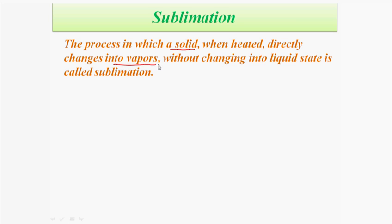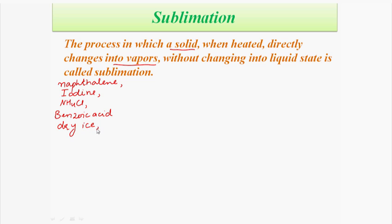This process is called sublimation. The substances which show such properties are called sublime substances. For example: naphthalene, iodine, ammonium chloride, benzoic acid, dry ice, camphor, etc. These are the various examples of sublime substances.